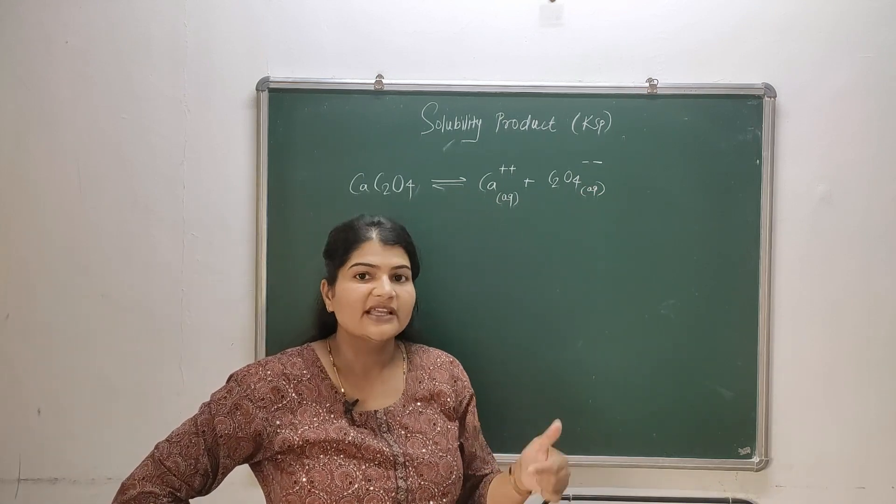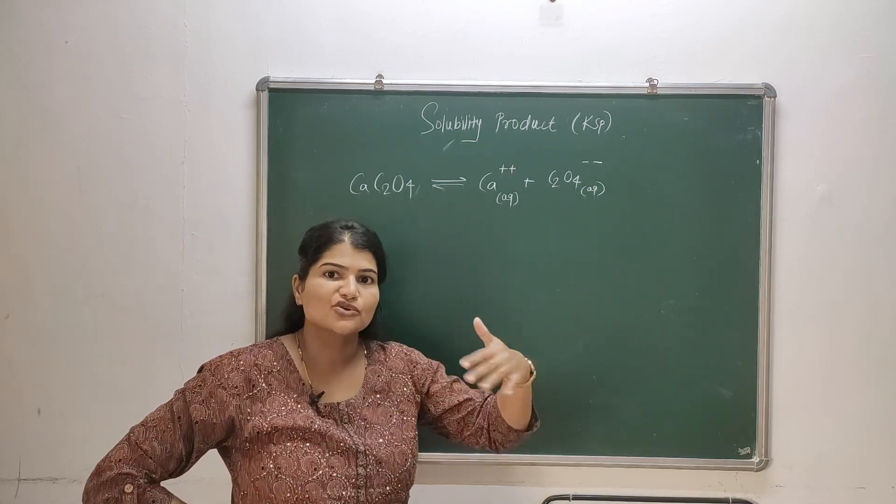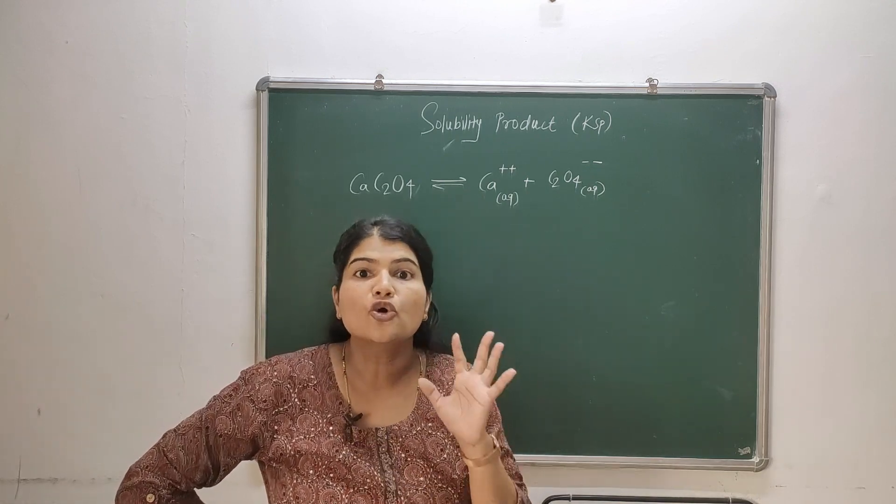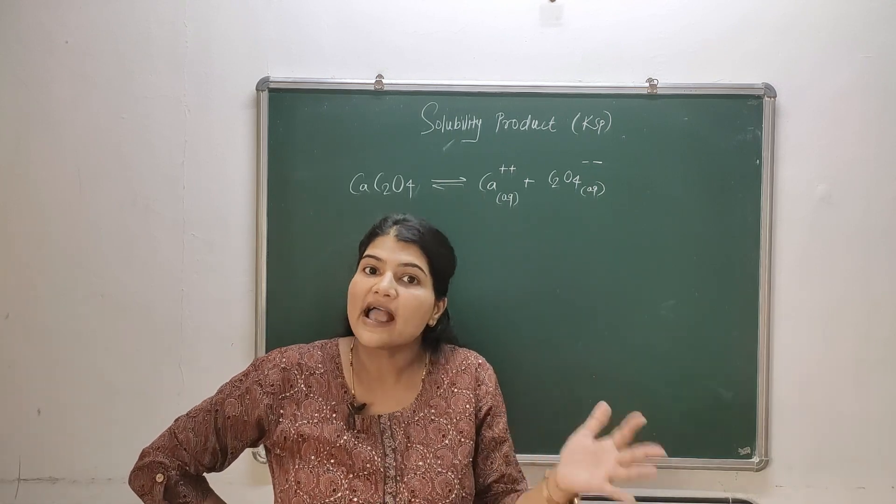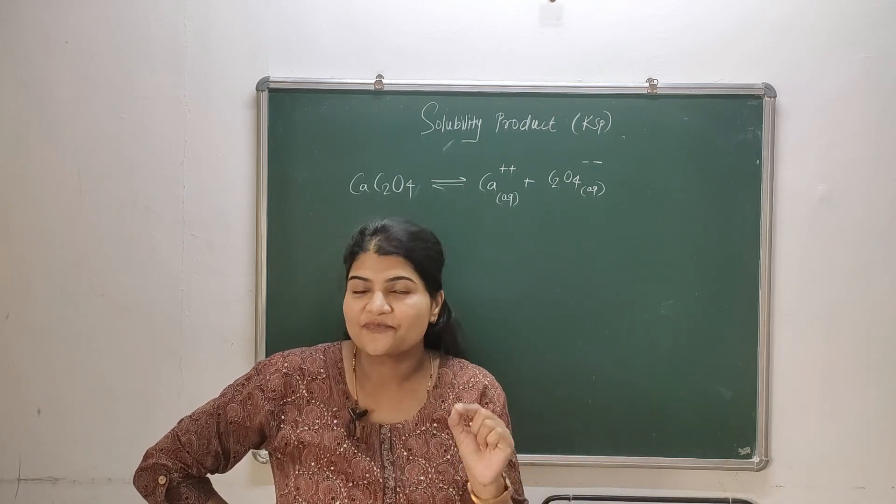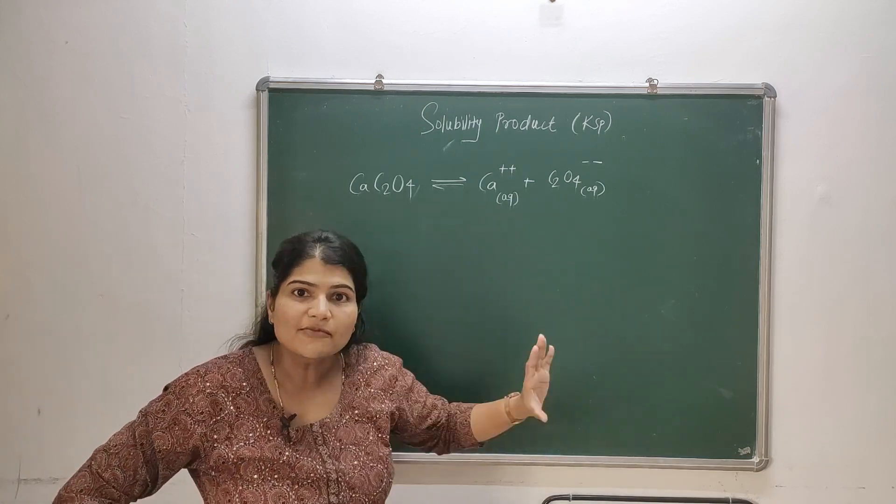Now as we go on dissolving more and more solute in the solvent, in a particular volume of solvent, then ionic concentration goes on increasing. Now that particular solvent cannot hold any more ions and that stage is called a saturation stage. At that point we are having maximum concentration of ions in that solvent.